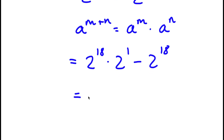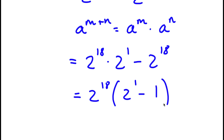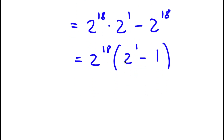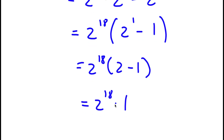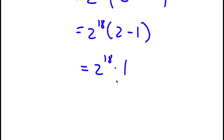From here, I can factor out 2 to the power of 18, giving 2 to the power of 18 times 2 to the power of 1 minus 1. Now 2 to the power of 1 is simply 2, so I have 2 to the power of 18 times 2 minus 1. And 2 minus 1 is 1, so I have 2 to the power of 18 times 1, which is simply 2 to the power of 18.